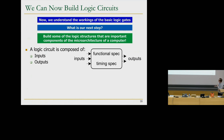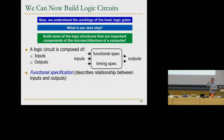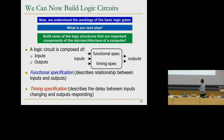Any circuit — AND gate, OR gate, NOT gate — is expressed this way. Functional specification describes the relationship between inputs and outputs, just like I did for the XOR gate earlier. That was the functional specification: NOT A AND B, or A AND NOT B. Timing specification describes the delay between the input changing and the outputs responding — all circuits have delays; these are not perfect.